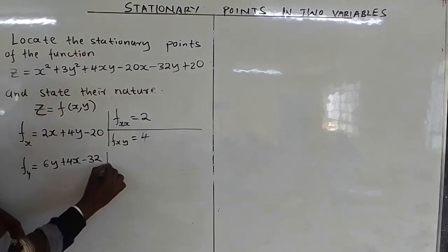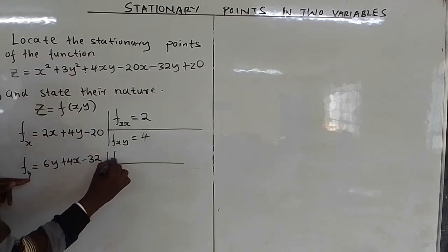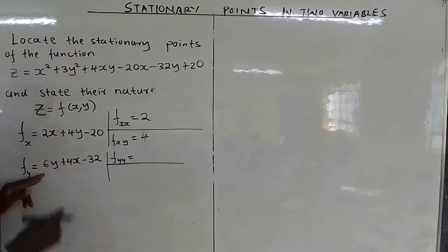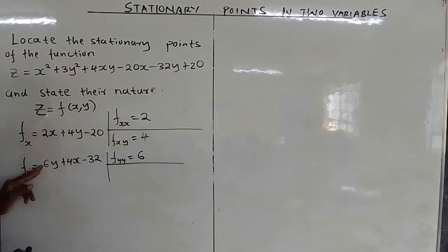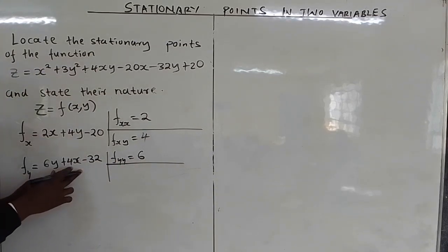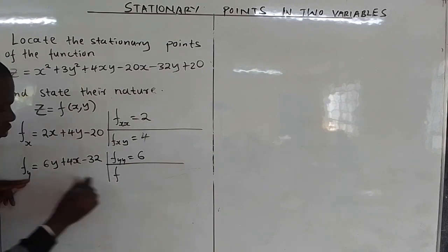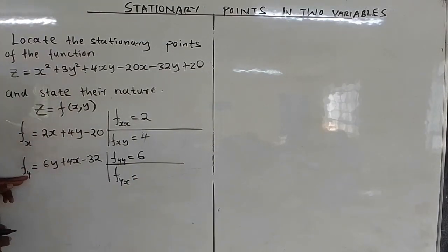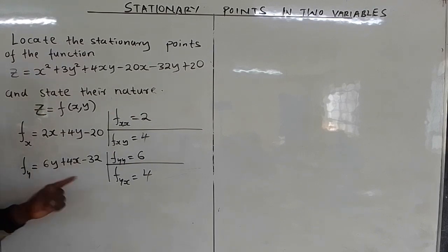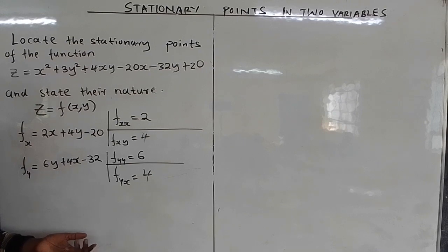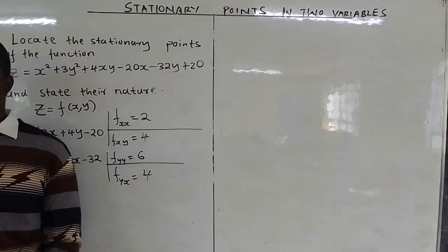For the second-order derivative of ∂z/∂y = 6y + 4x - 32 with respect to y again: differentiating 6y gives 6, 4x has no y so gives 0, constant gives 0, so fyy = 6. Then differentiating ∂z/∂y with respect to x: 6y has no x giving 0, differentiating 4x gives 4, constant gives 0, so fyx = 4.